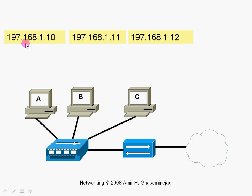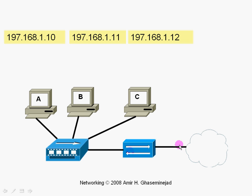It matters for computer A, because if the destination IP address is for a computer in the local subnet, then computer A will simply put it in a frame and send it to all of the computers in the subnet. If the destination is a computer in a remote subnet, then computer A must send the packet to the router and let the router send it to other subnets.